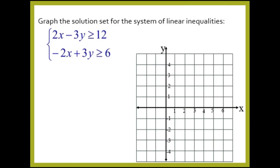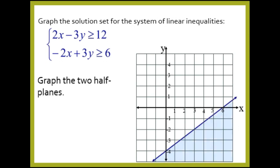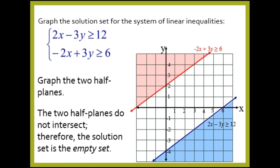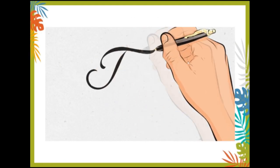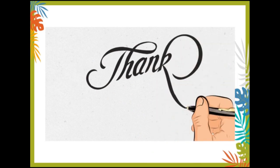Now try: 2x − 3y ≥ 12 and −2x + 3y ≥ 6. You can pause this video to solve it. This is the graph for 2x − 3y ≥ 12, and this is the graph for −2x + 3y ≥ 6. The two half-planes do not intersect; therefore, the solution set is the empty set. That's all for today. Thank you so much for listening. Have a good day.